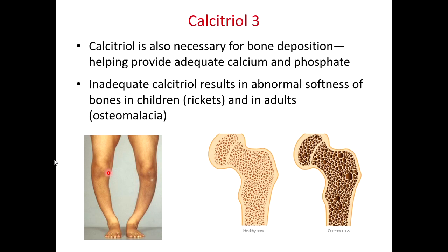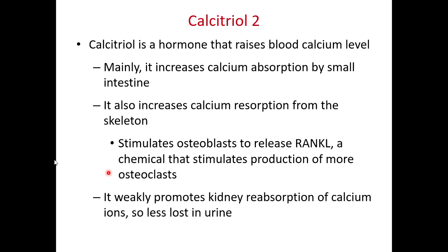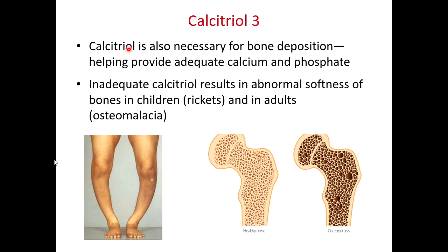If we don't have enough calcitriol, we also struggle with bone deposition. Without enough calcitriol, we don't absorb enough calcium from the small intestine, and ultimately can't deposit enough calcium into bones. Bones then become soft or bendy. In children this is known as rickets; in adults, osteomalacia. Here's a picture showing the bow-legged syndrome of rickets — the tibia, exposed to much weight-bearing, bows outward because it lacks enough calcium embedded in its extracellular matrix.